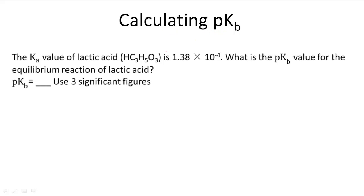Calculating pKb. In this problem, the Ka value for lactic acid (HC₃H₅O₃) is 1.38 times 10 to the negative fourth power. What is the pKb value for the equilibrium reaction of lactic acid?